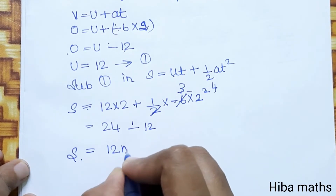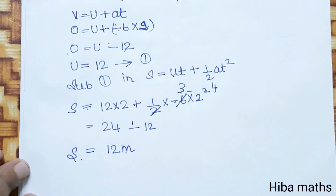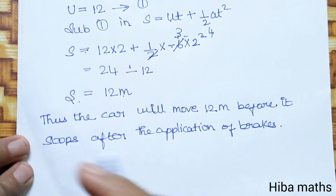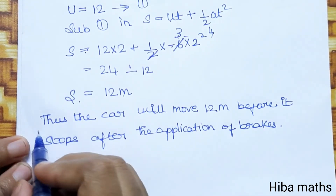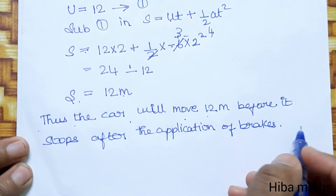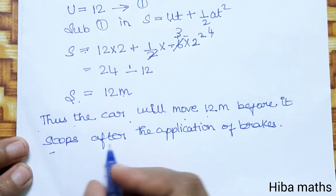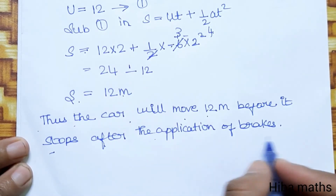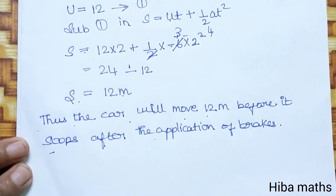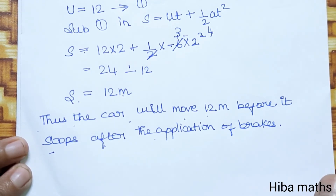So the value of s is 12 meters. Thus the car will move 12 meters before it stops after the application of brakes. If you have any doubts, please write in the comment section. Thank you so much for watching.